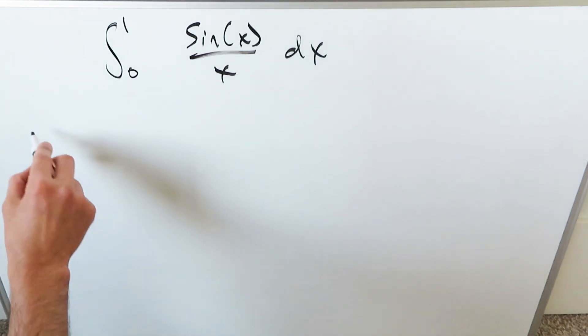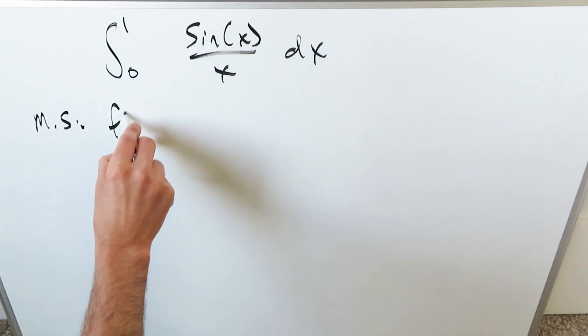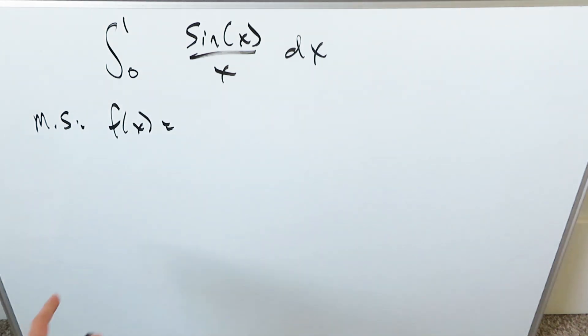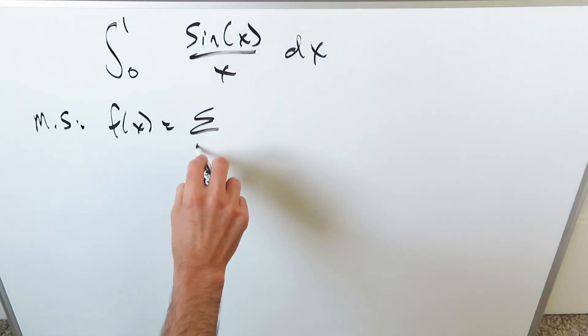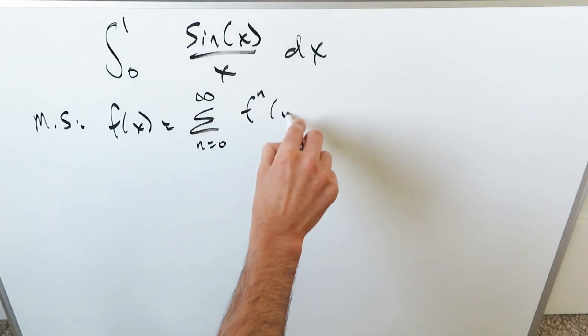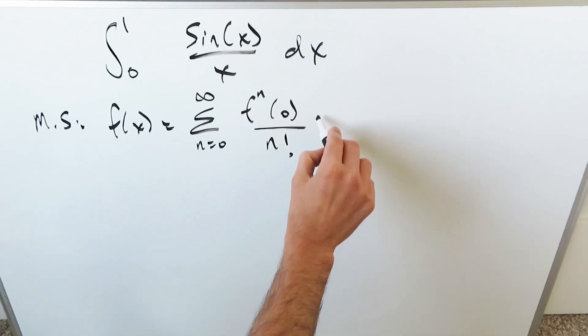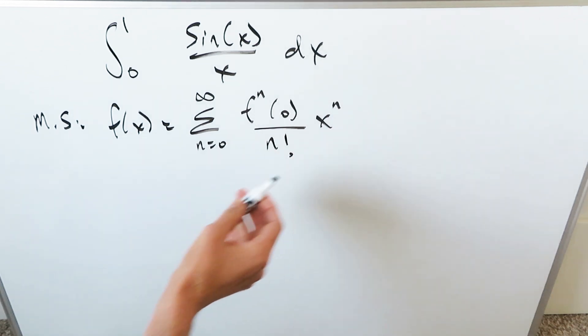When you're looking at the McLaurin series, we have a specific function that can be expanded into a power series format. That format would look something like this: from n equals zero up to infinity, you would have a certain nth order derivative with zero coming in, divided by factorial, and then x to the power of n. This is what we would have.